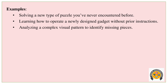The second example is learning how to operate a newly designed gadget without prior instruction — there is no prior instruction, yet we can operate it. The third example is analyzing a complex visual pattern to identify missing pieces without relying on fixed previous knowledge. This is Fluid Intelligence.